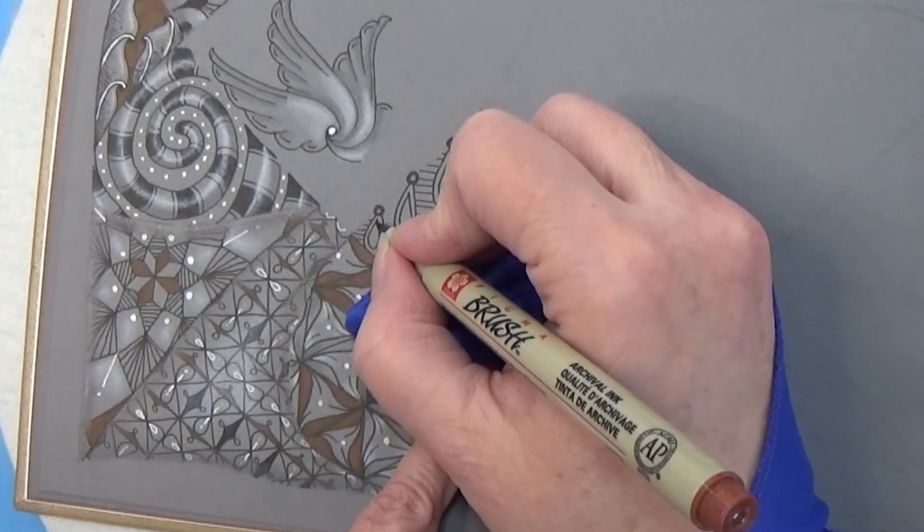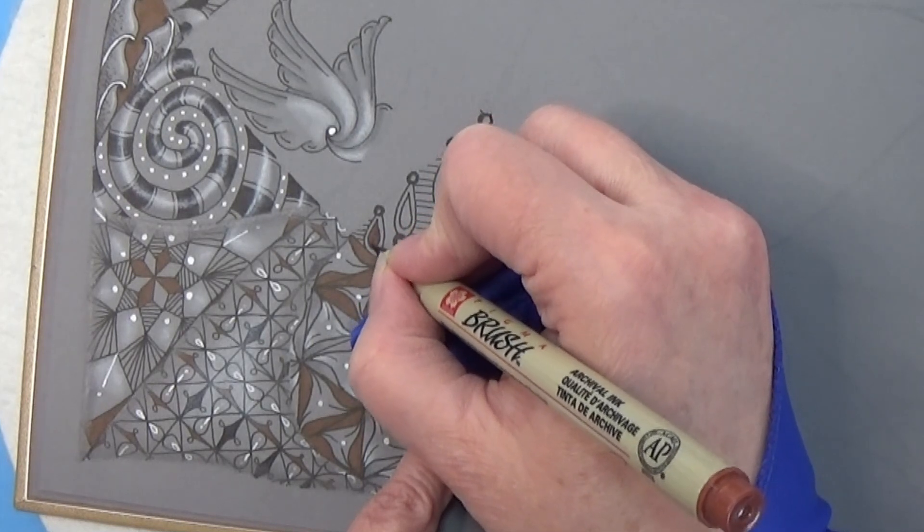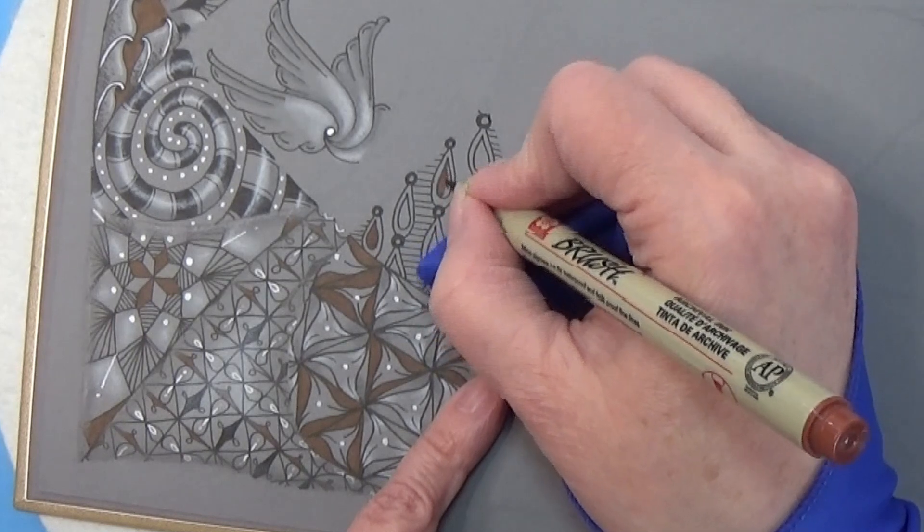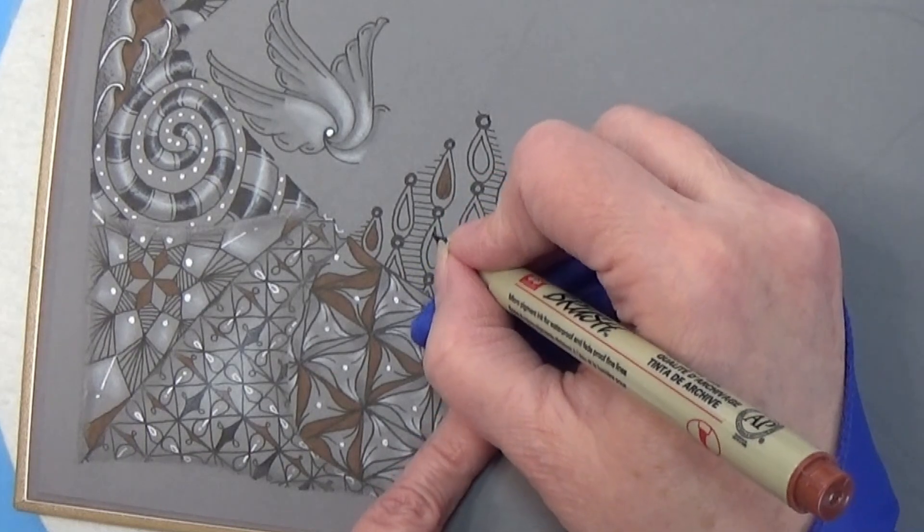I'm going in here and filling out again every second row, the center here of these teardrop shapes.